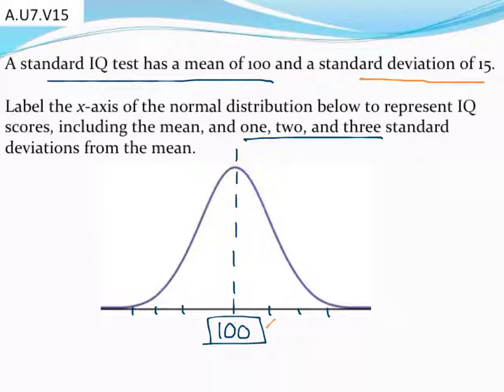So that means one standard deviation above the mean would be 115. If I add 15 again, I'm going to be at 130. And if I add 15 again, I'd be at 145. Meaning an IQ score on this test of 145 would represent three standard deviations above the mean.